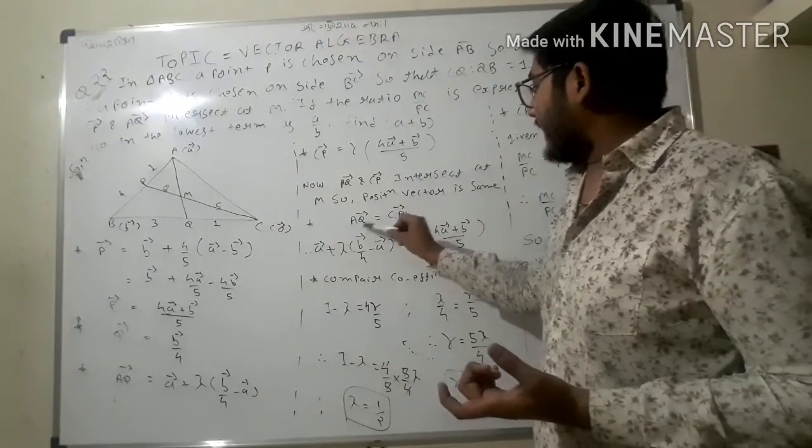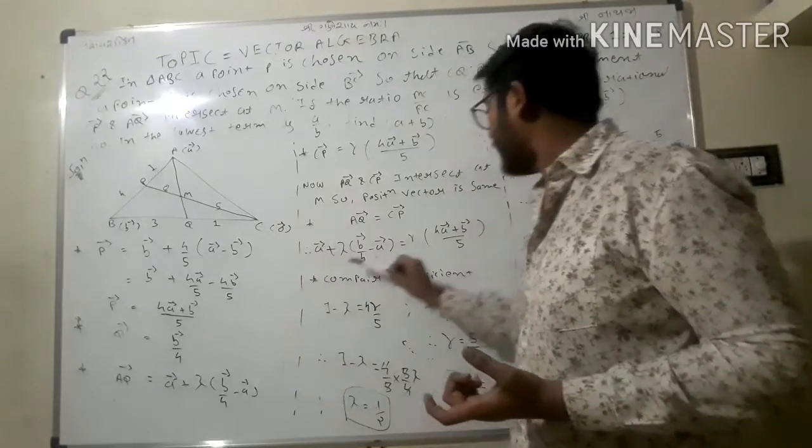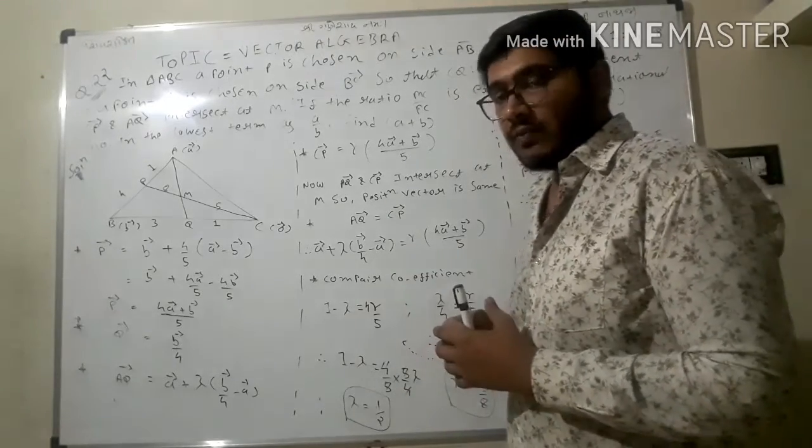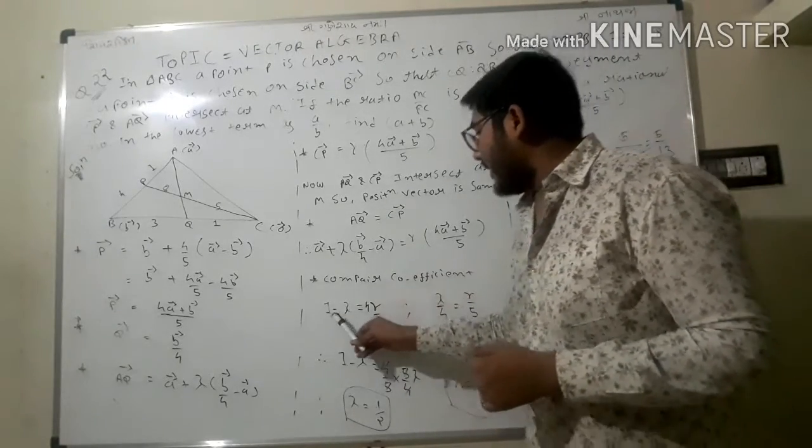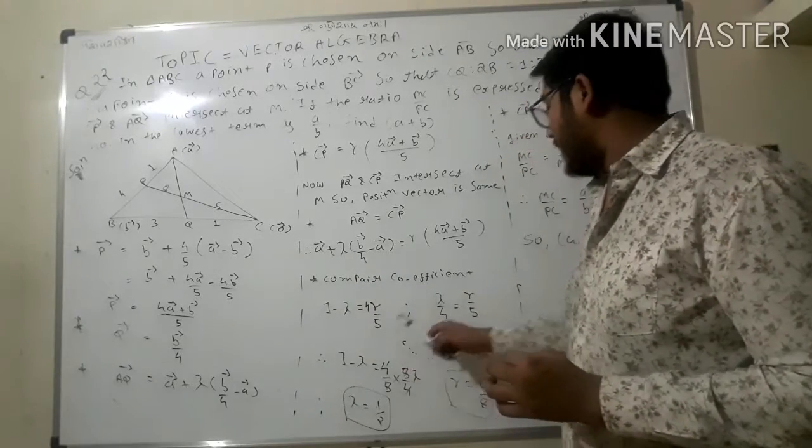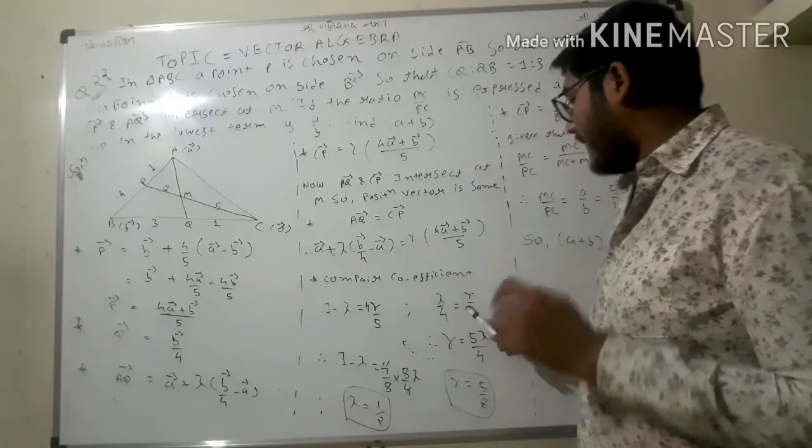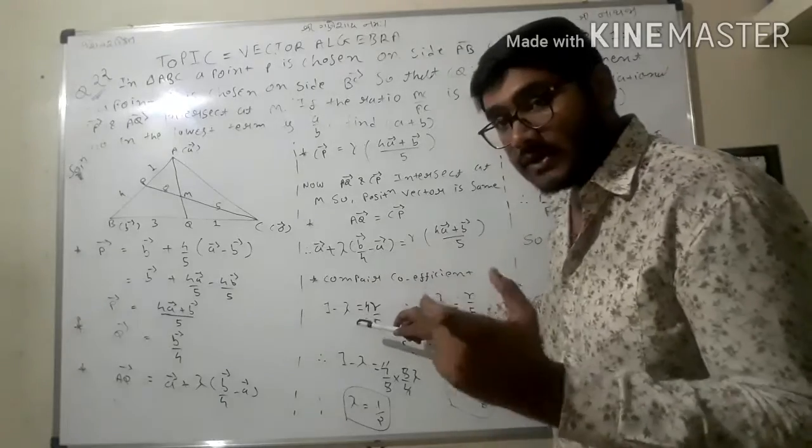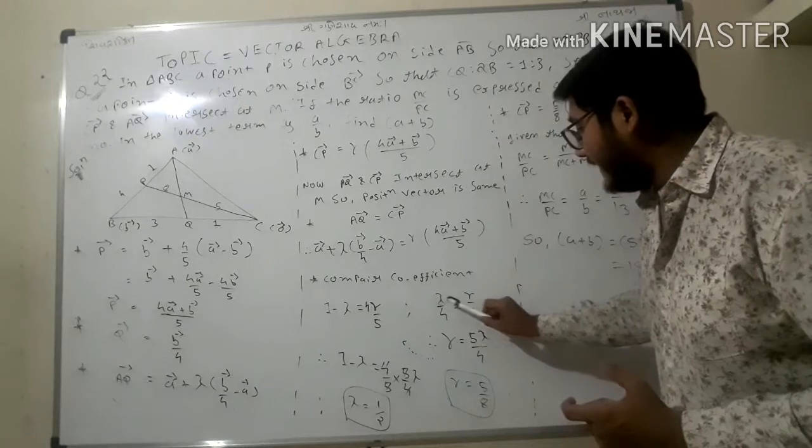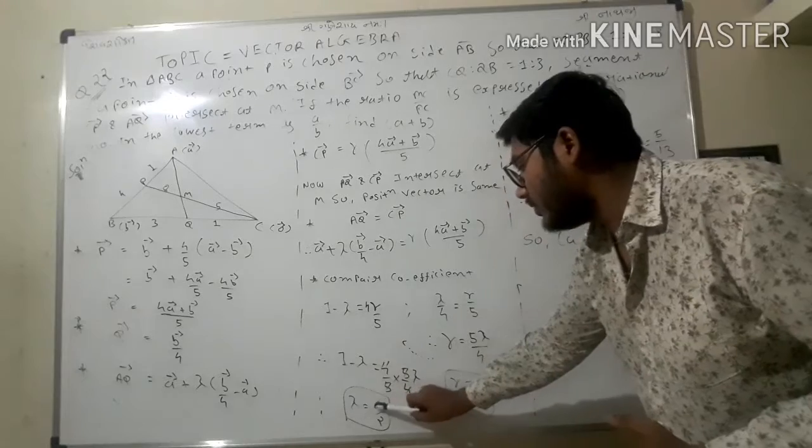Now comparing both coefficient values, I get a vector coefficient is 1 minus lambda equals 4 lambda upon 5, and b vector's lambda upon 4 equals gamma upon 5.